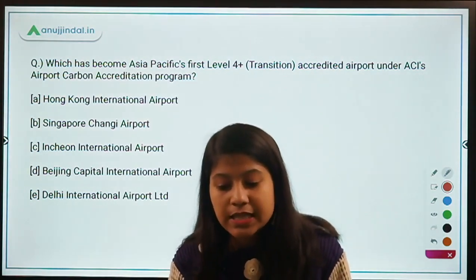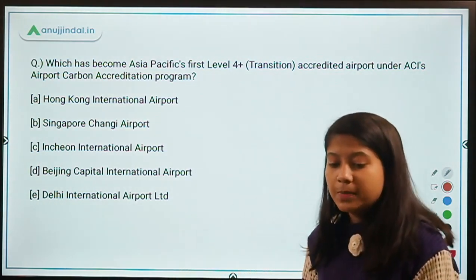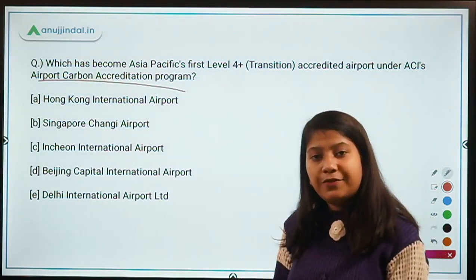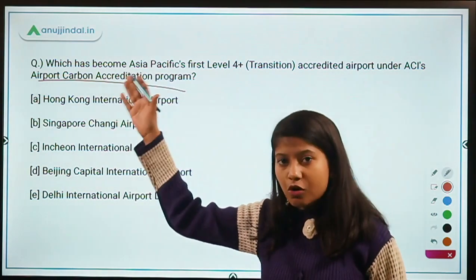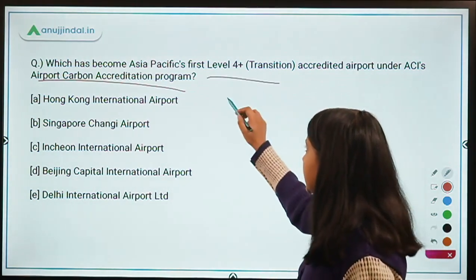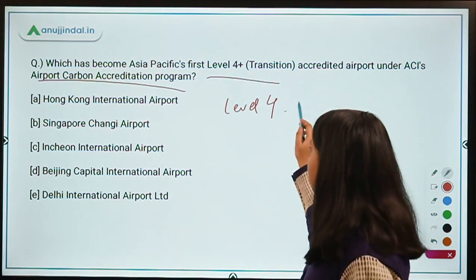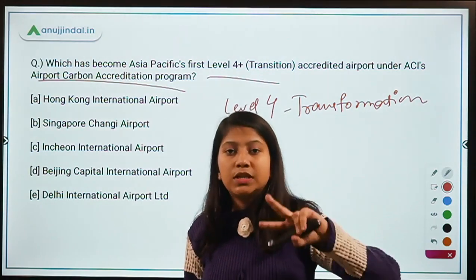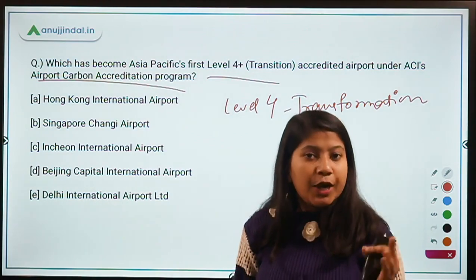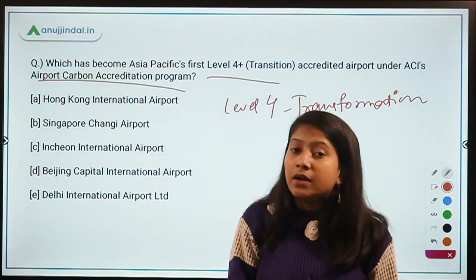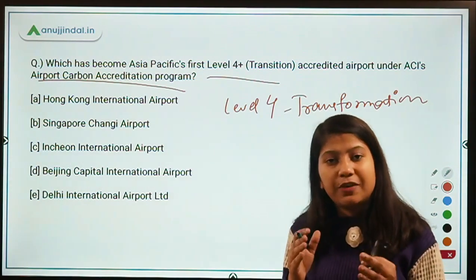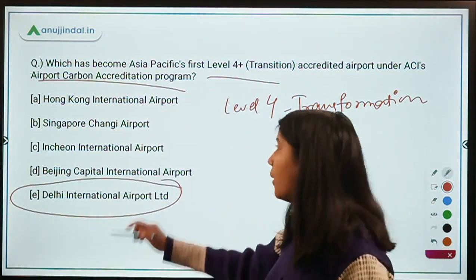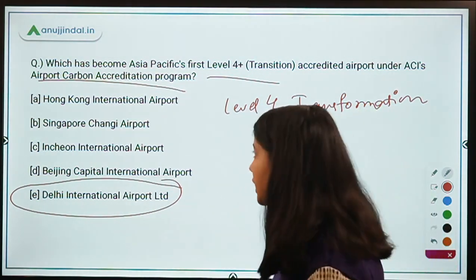Which has become Asia-Pacific's first Level 4 Plus Transition accredited airport under the ACI Airport Carbon Accreditation Program? The program was launched by Airport Council International to encourage airports in their efforts toward eliminating carbon emissions. Level 4 Transformation and Level 4 Plus Transition certifications were launched in 2020 to align airport efforts with the Paris Agreement. Delhi International Airport became the first airport in the Asia-Pacific region to obtain this Level 4 Plus accreditation.